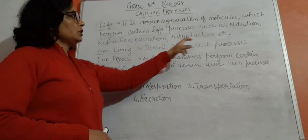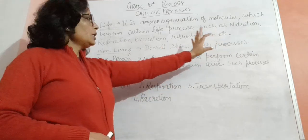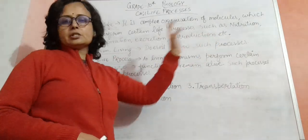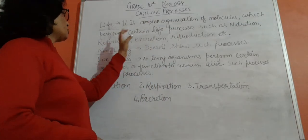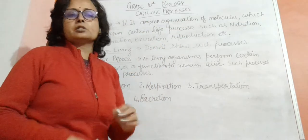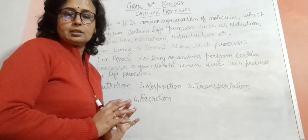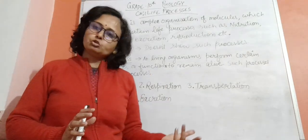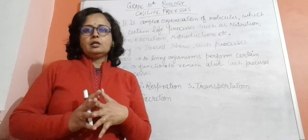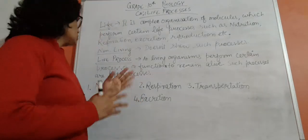In non-living things, all these life processes can't be seen, doesn't show such process. Non-living things, all these things are not like nutrition, respiration, excretion, reproduction, transportation, we cannot see in non-living things, just in living things. So which of these processes are, those are living, if there are not, then it is non-living.